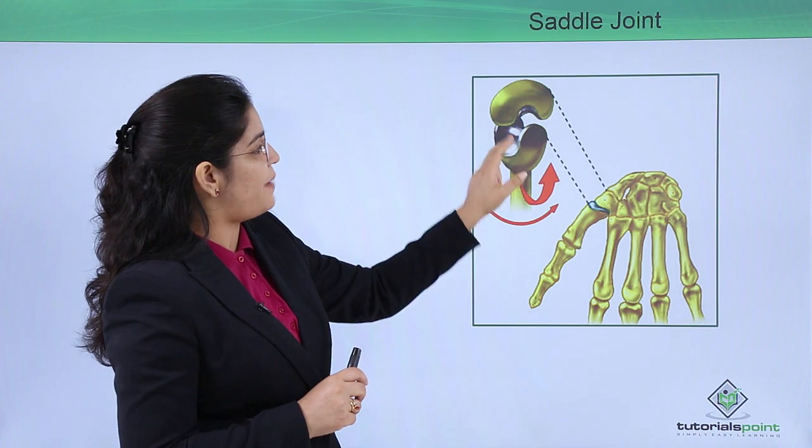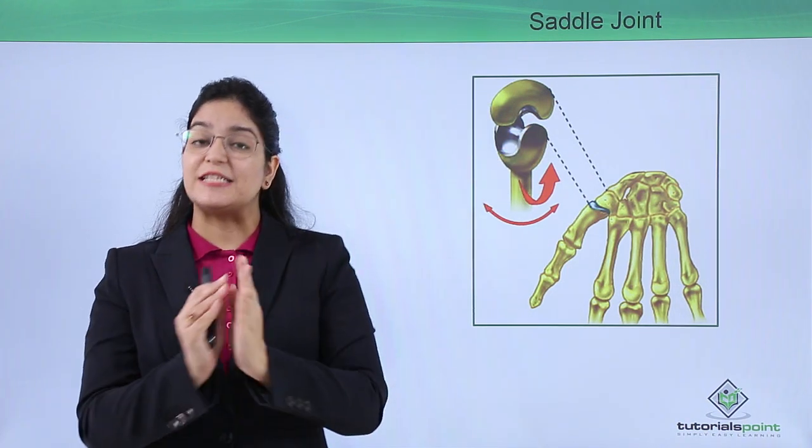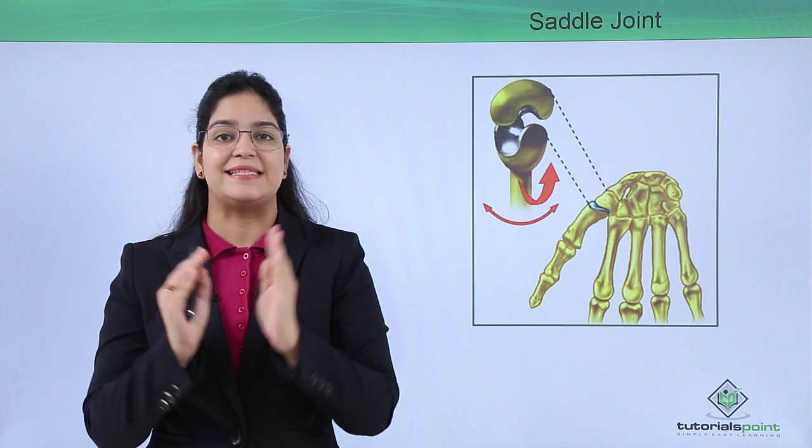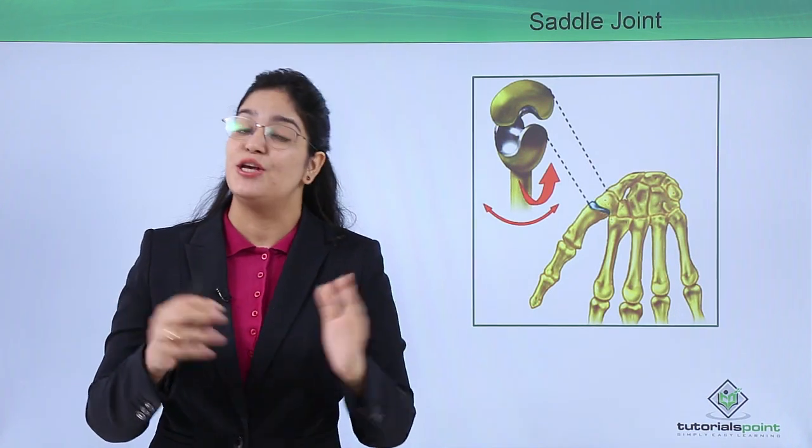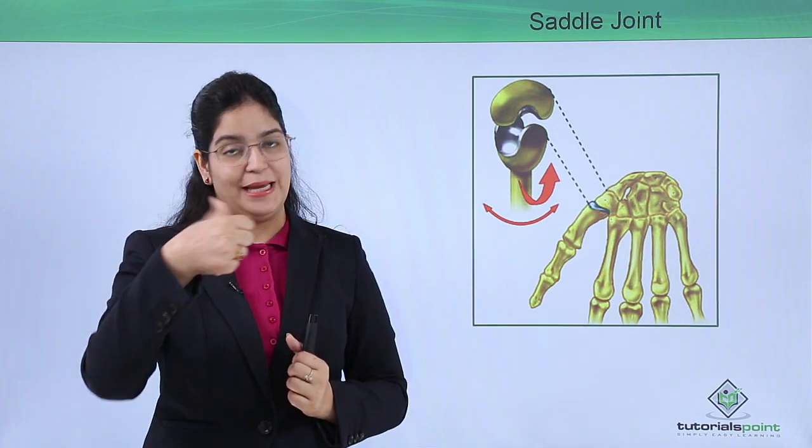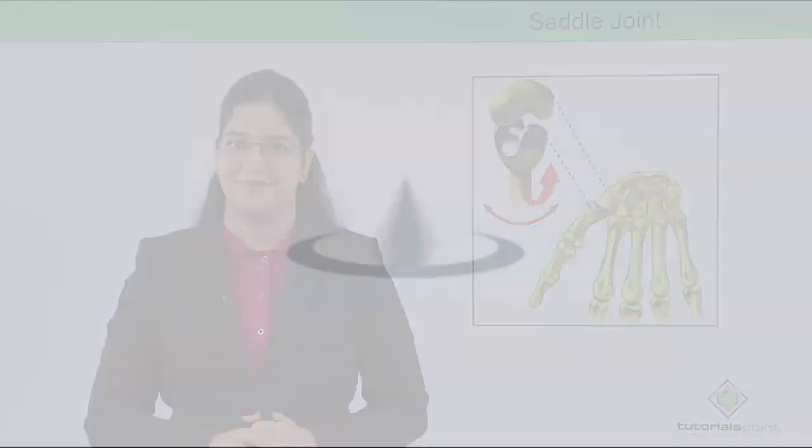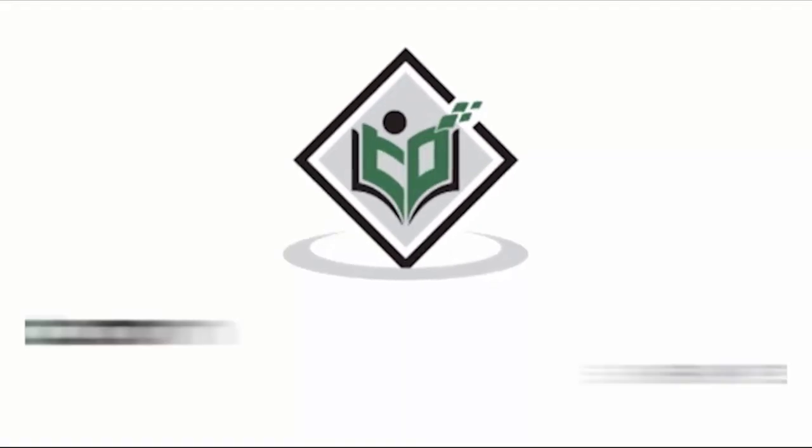So in this video, we have learned why a saddle joint is called the saddle joint, and how this saddle joint makes our thumb very movable. I hope you liked this video. Thank you. TutorialsPoint.com - Simply Easy Learning.